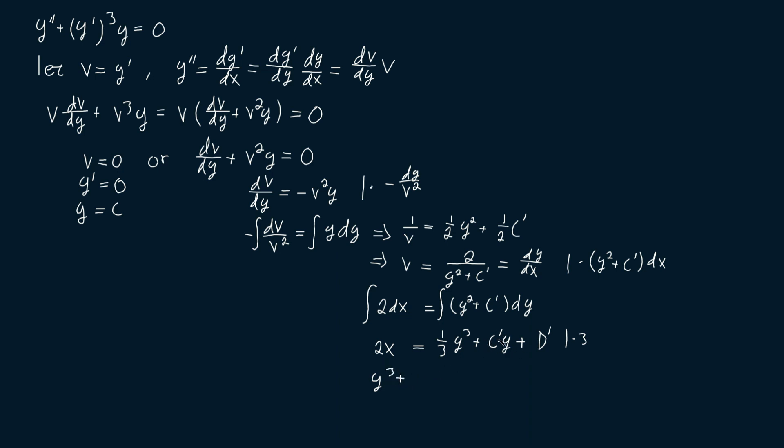to get that y cubed plus, let's then call three c prime c, since it's just some constant, and let's call three d prime just d, and let's move this three times two x to the right-hand side to get that it's equal to minus six x and everything here is equal to zero.